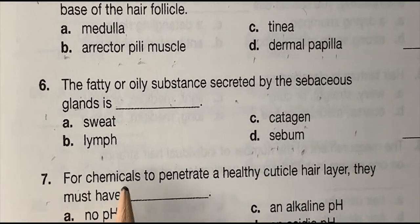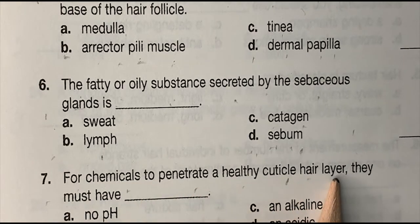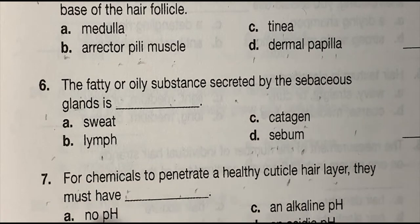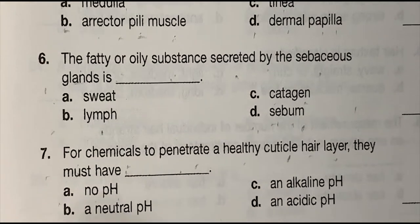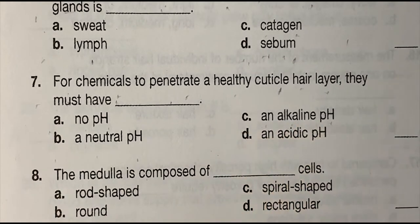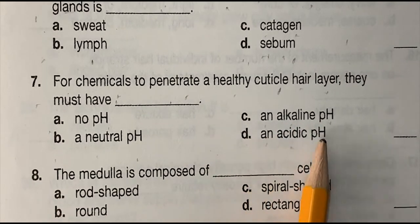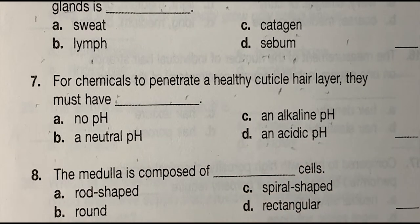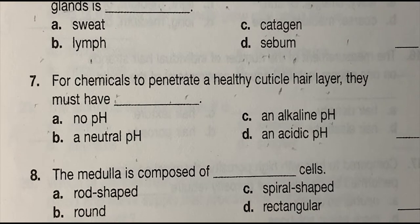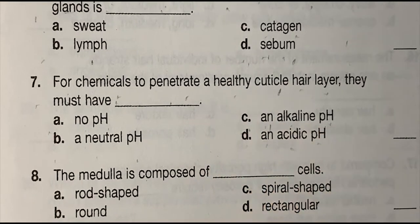Number seven: for chemicals to penetrate a healthy cuticle hair layer they must have blank — (a) no pH, (b) a neutral pH, (c) an alkaline pH, or (d) an acidic pH. The correct answer is (c) an alkaline pH.